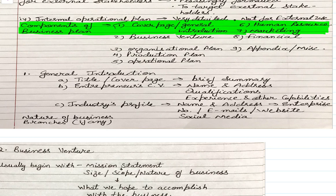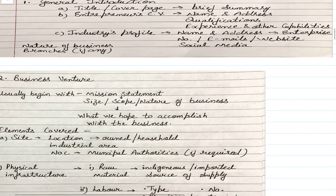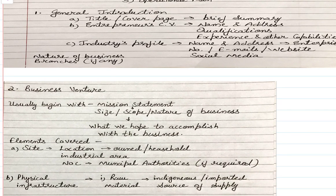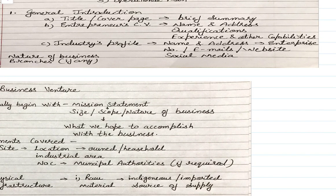First of all, the cover page or general introduction — the reader wants to know who you are, who is bringing the business plan to them, so they need a basic idea about you. The general introduction contains a title or cover page with a brief summary, the name of your enterprise, and a basic summary. After that comes the entrepreneur's CV — their name, address, qualification, and experience.